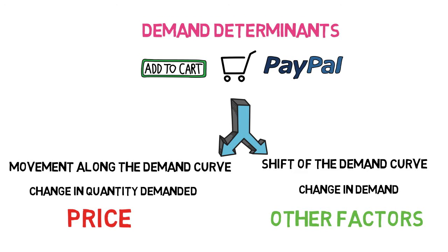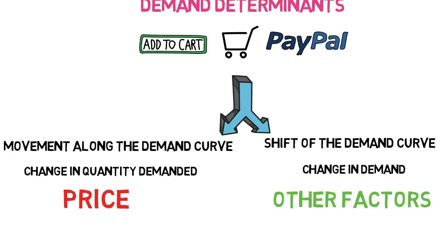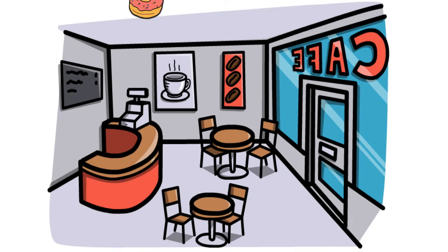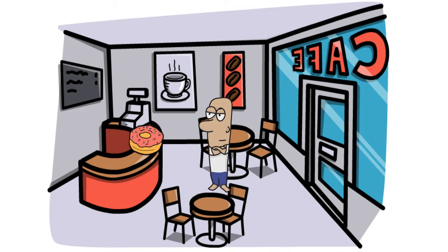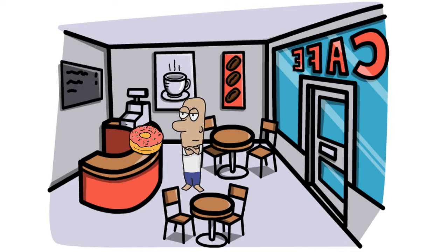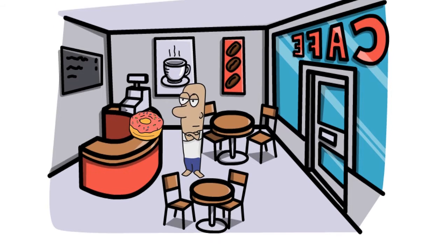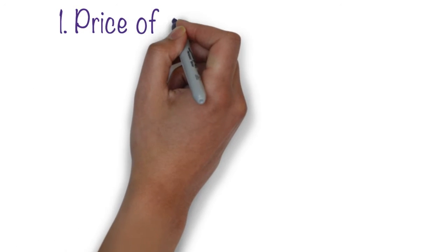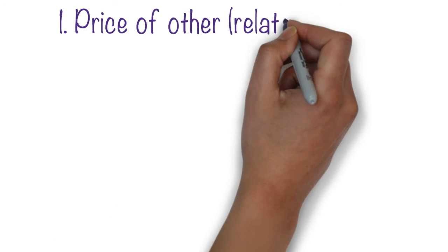We're going to start with a simple example of a cafe and a person's decision whether to buy a donut or not. All of our determinants of demand will be related to this decision, and we'll see there's a whole range of factors over and above price that affect this demand decision. The first factor we'll look at is the price of other goods.